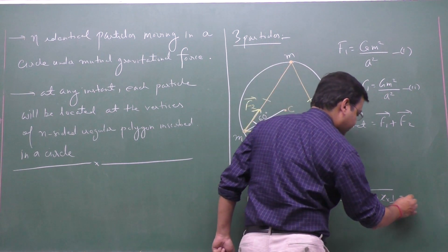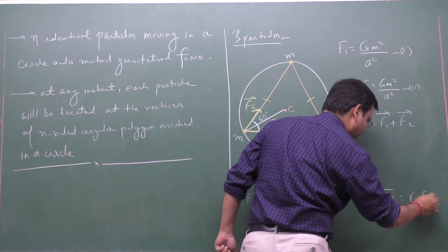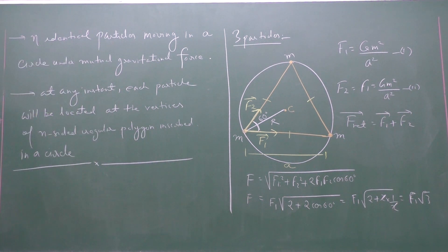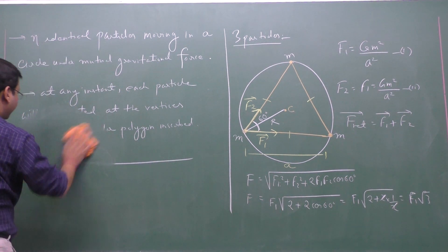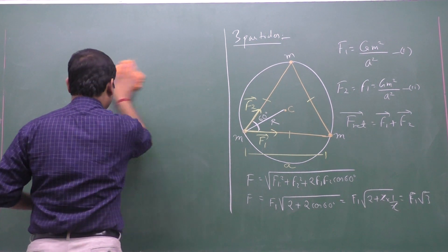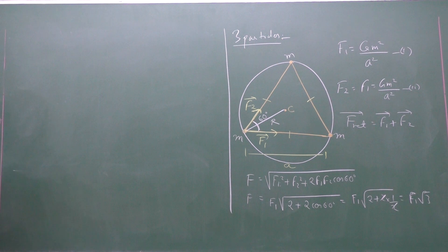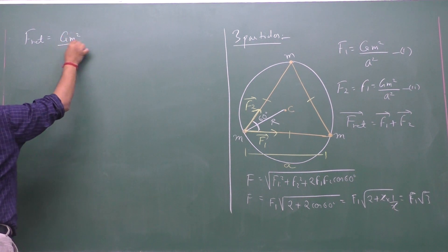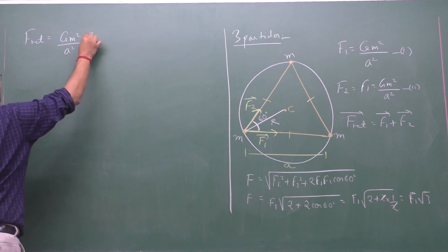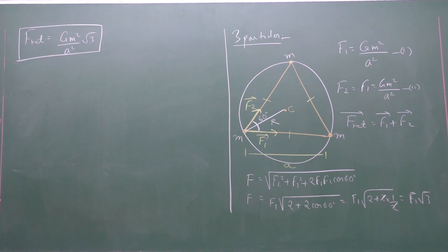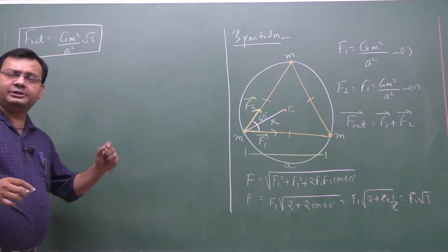The net force is F1·√3. Substituting F1 = Gm²/a², the net force on any one particle is F_net = √3·Gm²/a². Now, since F1 and F2 have equal magnitude, the resultant bisects the angle between them and is directed along the diagonal — towards the center of the circle.